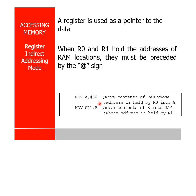Whatever data is available at address 40 will go to A. Suppose after that you write INC R0 — now R0 becomes 41. Then if you write MOV A, @R0, the data from memory location 41 will go to A. In summary, MOV A, @R0 means move the content of RAM whose address is stored in register R0.